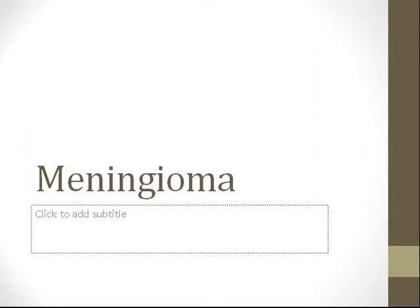Hello and welcome to the second video in a three-part series on primary brain tumors in adults. In our first video we talked about astrocytomas, and in this video we'll be dealing with meningiomas. Meningiomas are tumors of the meninges which arise from the arachnoid and are attached to the dura.